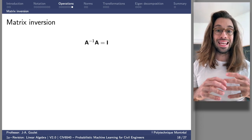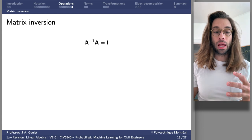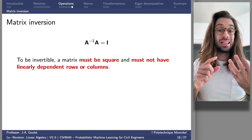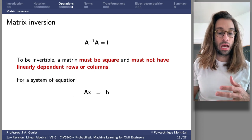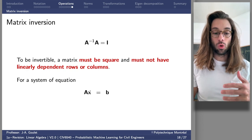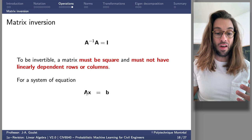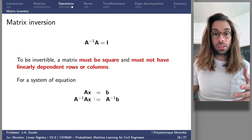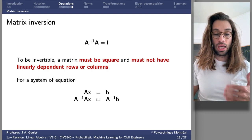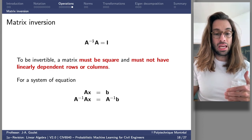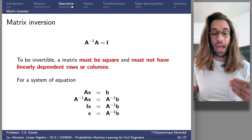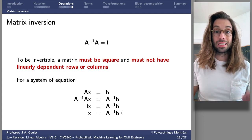A common operation is matrix inversion. If we multiply the inverse of a matrix with the matrix itself, the result is always the identity matrix. To be invertible, a matrix must be square and must not have linearly dependent rows or columns. For a system of linear equations AX = B, we can multiply both sides by A inverse: A inverse times A times X equals A inverse times B. Since A inverse A is the identity, we isolate X = A inverse B. This allows us to solve systems of linear equations.